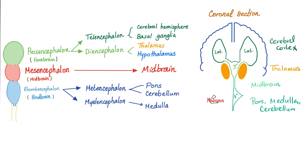Keep in mind that the lateral ventricles are the ventricles of the telencephalon, whereas the third ventricle is the ventricle of the diencephalon. The cerebral aqueduct of Silvius is not literally a ventricle — it's just a duct, the cavity of the midbrain. The fourth ventricle is the cavity of the hindbrain. Keep it neat, keep it simple, keep it organized.